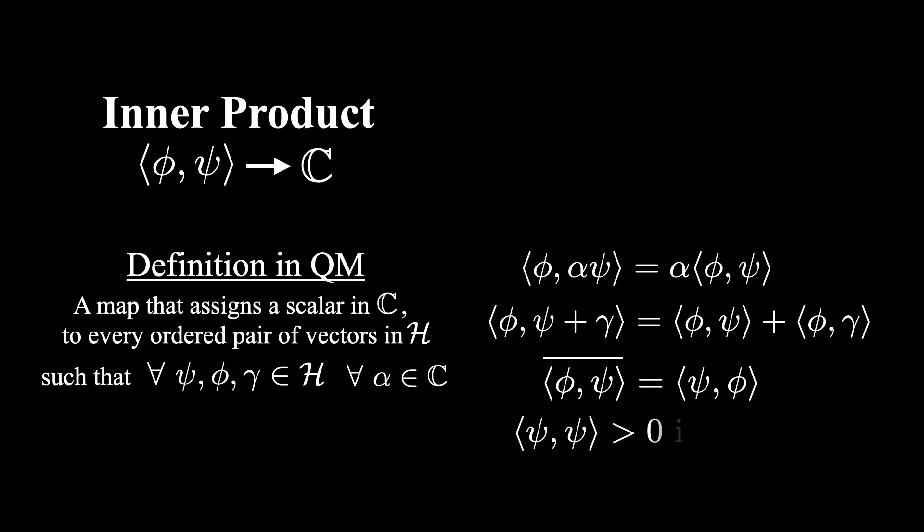And finally, the last rule is that the inner product of a vector with itself is always greater than zero if the vector itself is not the zero vector. And this is equal to zero if and only if you take the inner product of the zero vector with itself.